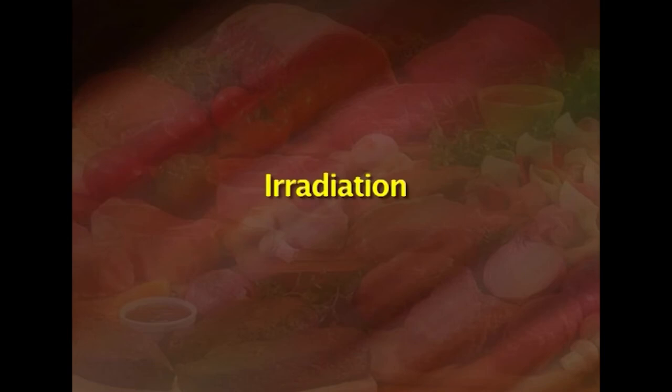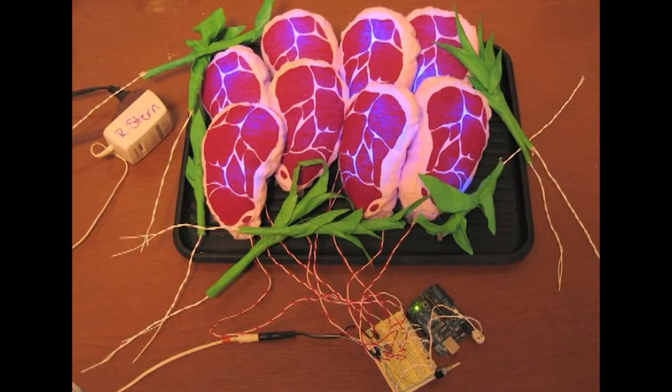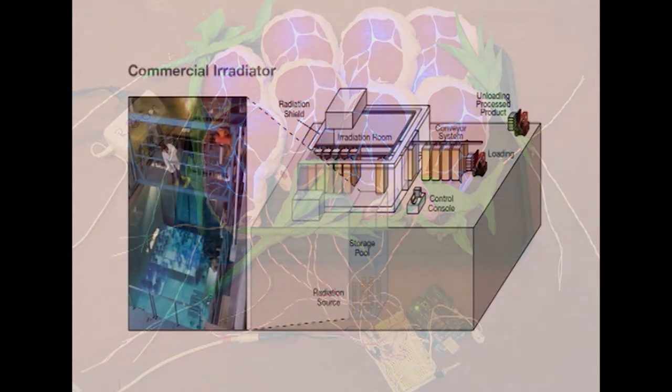The next method of preservation is irradiation. Radiation is the emission and propagation of energy in a material medium. Electromagnetic radiations in the form of continuous waves are capable of ionizing molecules in their path. These radiations destroy microorganisms by fragmenting their DNA molecules and causing ionization of inherent water within them. Since microbial destruction takes place without significantly raising the temperature of food, irradiation is often referred to as cold sterilization.